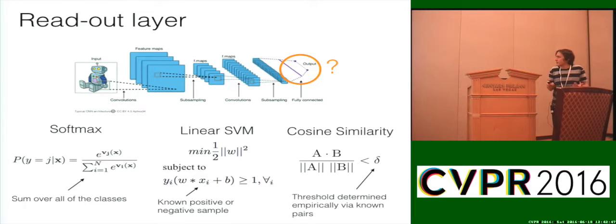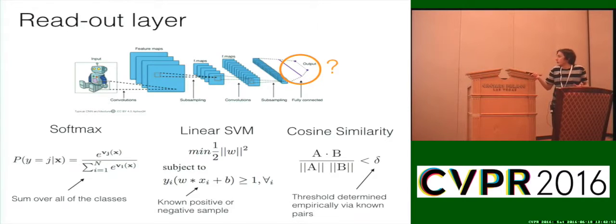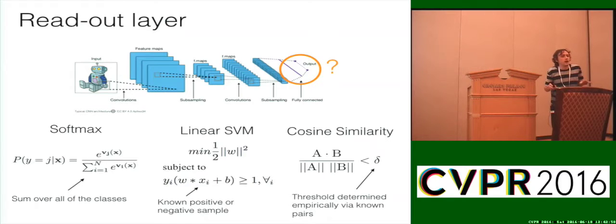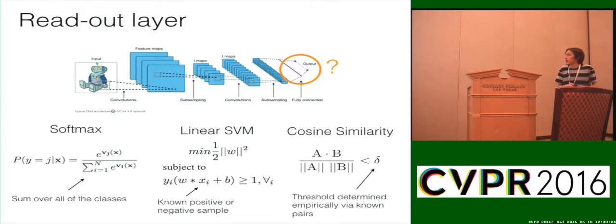Even if you take something very basic like cosine similarity, which appears in a lot of recent papers doing video-to-video matching, you have to estimate an empirical threshold — and again, that's only based on the data you know about. So that doesn't help you either. Are there alternatives? That's what we're going to talk about today.